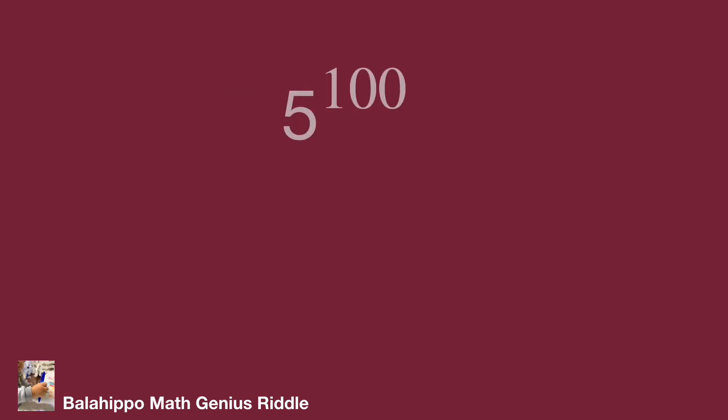Our value 5 power 100 equal to 5 square power 50. After that, substitute 5 square by 3 square plus 4 square. The value become quantity 3 square plus 4 square power of 50.